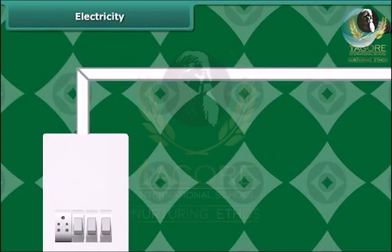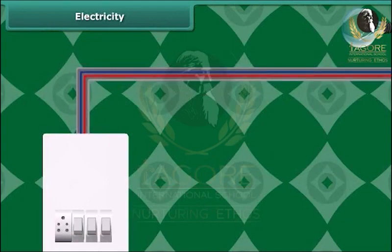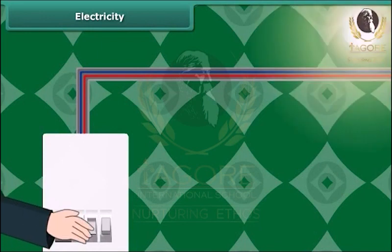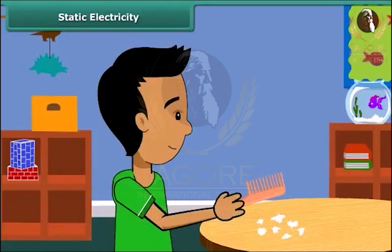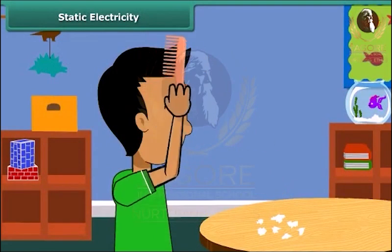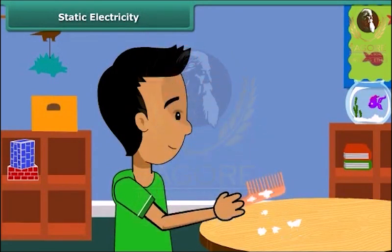Electricity passes through the wires and reaches the filament of the bulb, heating it up to glow. When we comb our hair with a plastic comb and take it near small pieces of paper, the paper pieces are attracted toward the comb. We then say that the comb is charged with electricity.